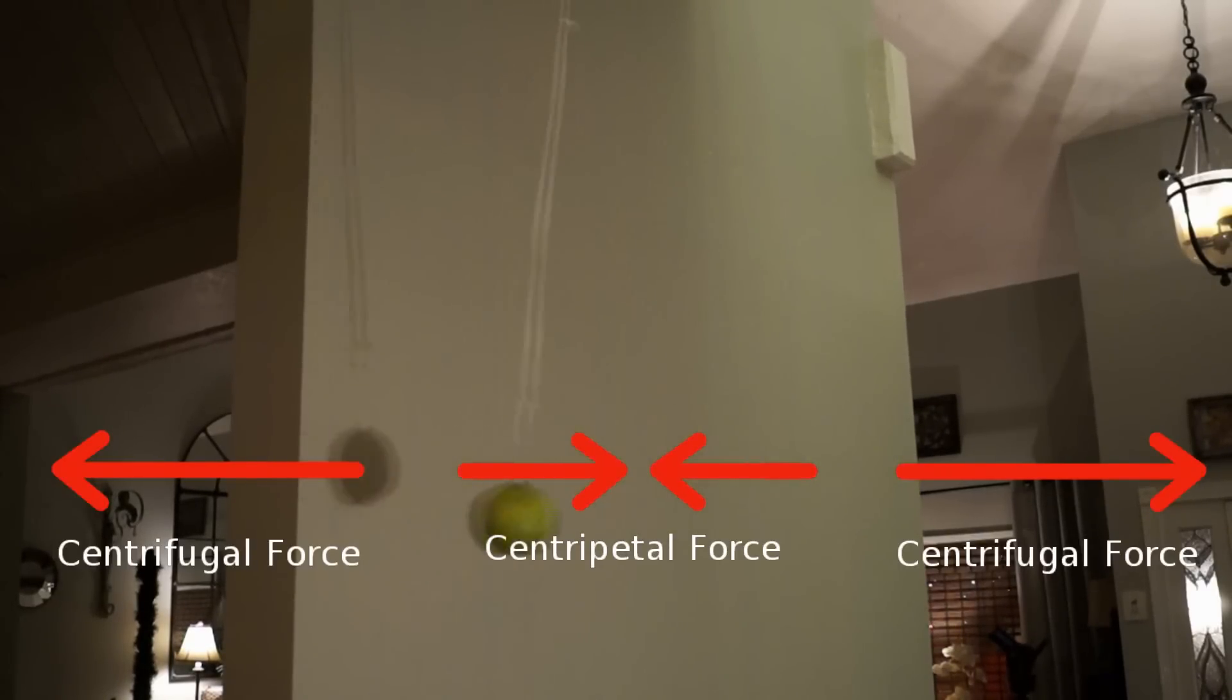It's sometimes called a fictitious force because it's not really a force like gravity is. It is a kind of resulting force. It's resulting from the tendency of an object to want to go in a straight line. And when you force it to go into a circle, then it resists that, so it pulls outward.